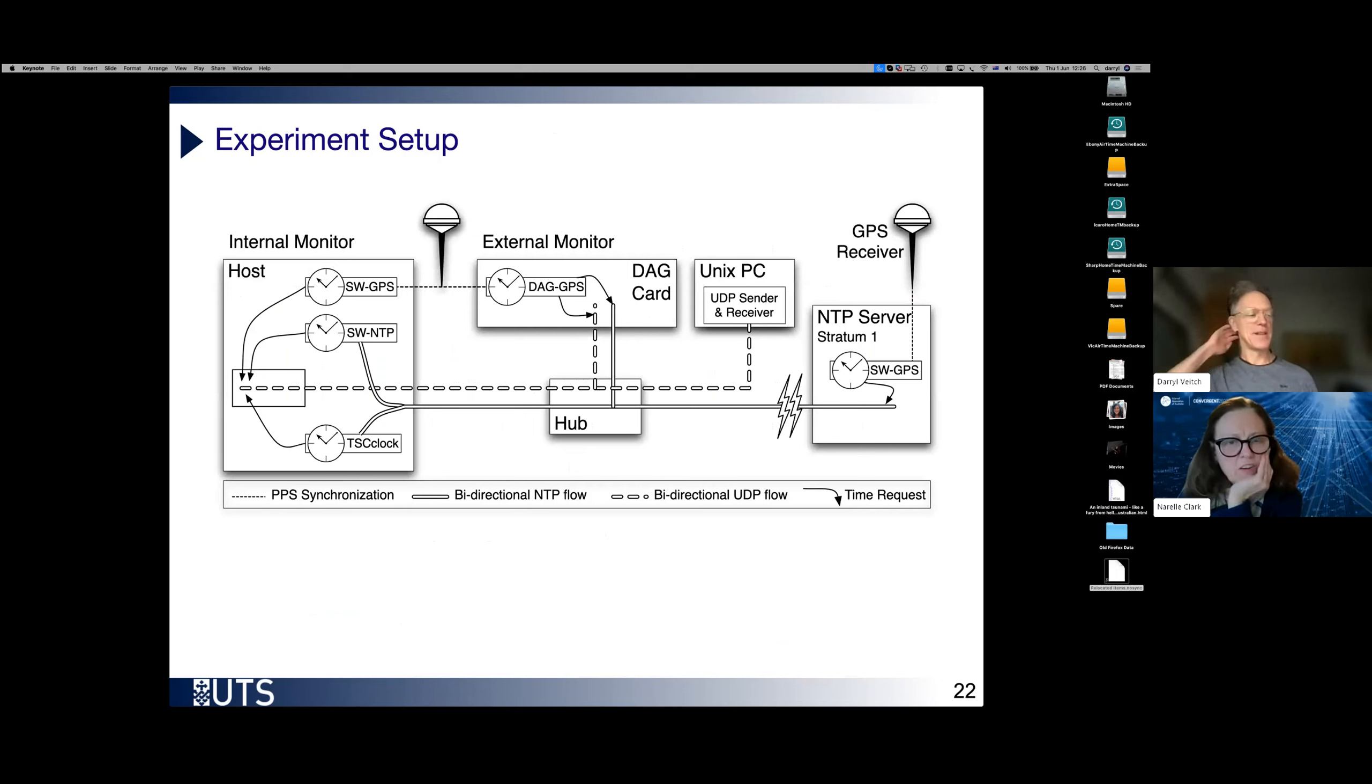Now, why should you trust me? Well, here's hopefully part of the reason. This is the experimental setup that we had at the time. We have our local Stratum-1 white mushroom GPS receiver here, which was synchronizing into this host. This is where the experiments are running in the host on the left. So I would synchronize the clocks in here, both the NTP clocks synchronizing either to the GPS receiver or over the network and the TSC clock synchronizing over the network. We would siphon off packets by this hub so that we can make independently timestamped packages using a very expensive DAG card.